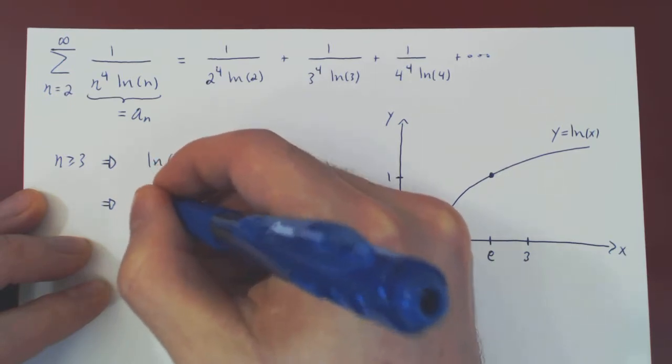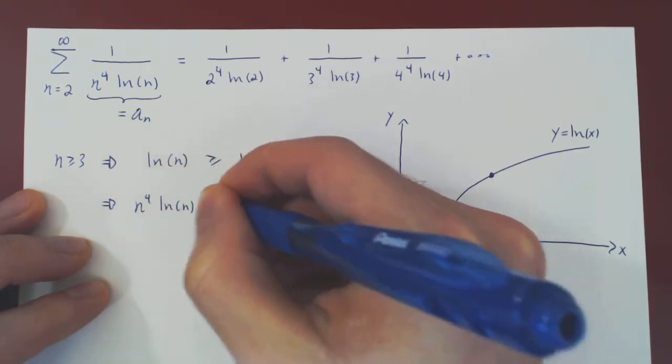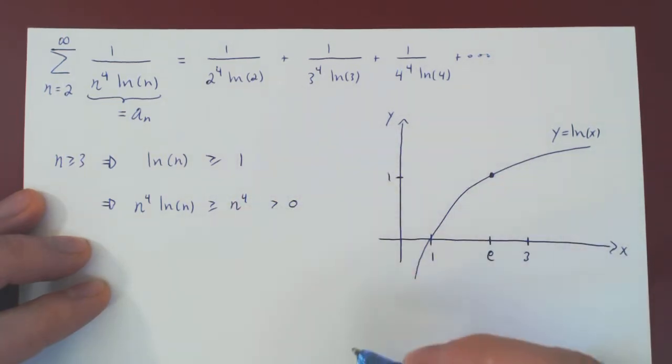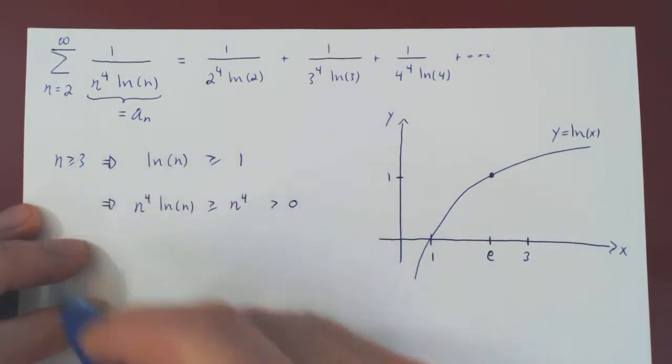So n to the 4, ln of n, is at least n to the 4 times 1, which is n to the 4, which is strictly positive when n is at least 3.